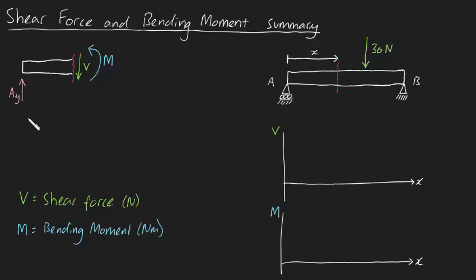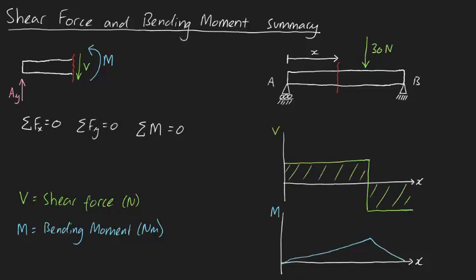By making clever cut selections and analyzing them using the sum of forces equals zero and the sum of moments equals zero, you can prove that this particular shear force diagram looks like this, and this particular bending moment diagram looks like this.